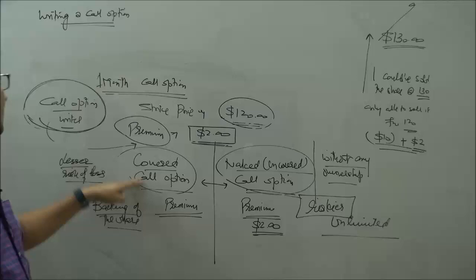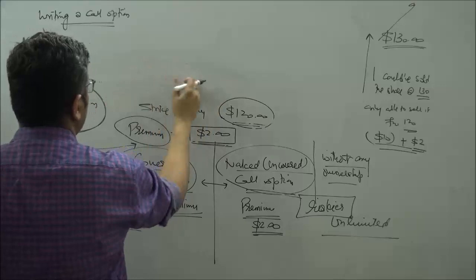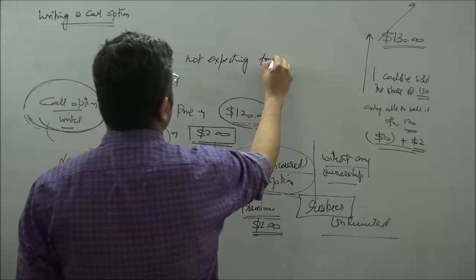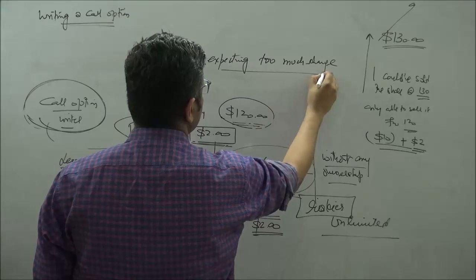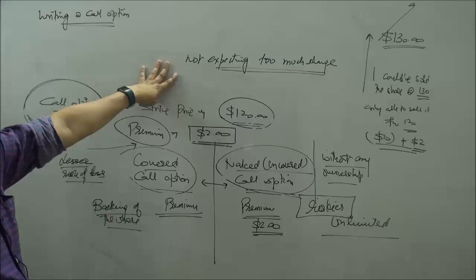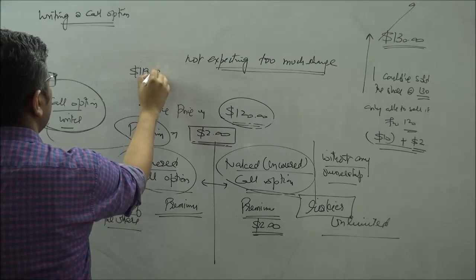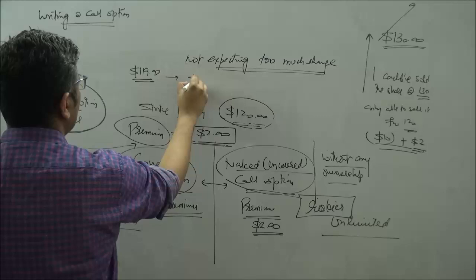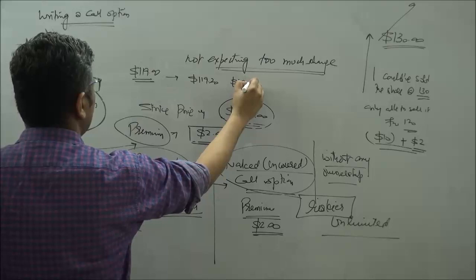The question, of course, comes under what circumstances should you go for a writing of a call option when you are under a covered call option or an uncovered call option. So we say that if you are, for example, not expecting too much change, if you are not expecting too much of a movement, too much of a change, too much of a volatility, writing an option is a good idea. It does not matter whether it's a covered call option or an uncovered call option. So I know that today the share price is $119, it takes a snail's pace. So every month the movement goes like $119.20, $119.60, $119.90, something like that.